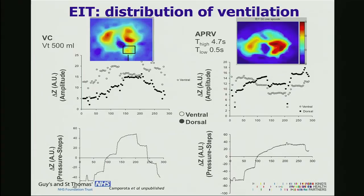This shows distribution of ventilation using two types of mechanical ventilation settings: volume control and APRV. Open circles are the ventral regions and closed circles are the dorsal regions. In volume control mode, all ventilation is preferentially distributed in the ventral areas. Whereas in APRV, at the beginning they start with the same distribution and then completely reverse — the dorsal regions become much more ventilated than the ventral ones.